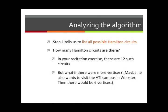When you get to recitation and work on this problem, you're going to have to find 12 Hamilton circuits. The handout you will get for recitation will give you exactly 12 rows, so you know you need to fill that in with the 12 Hamilton circuits. But what if there were more vertices? For example, suppose we changed the problem by saying that President Gee also wants to visit the ATI campus in Worcester. Then we would have a graph with six vertices — would there be more Hamilton circuits? You'd certainly think so.